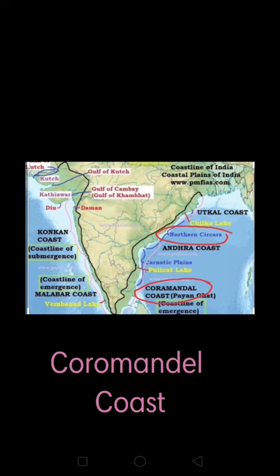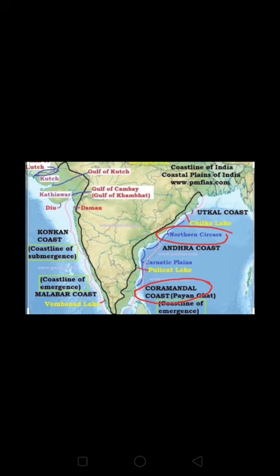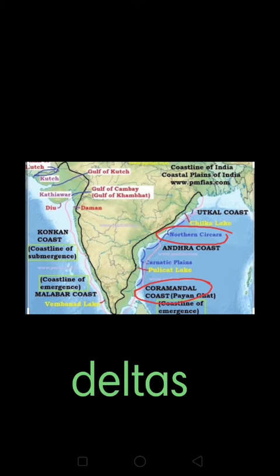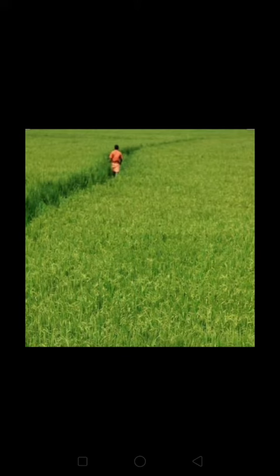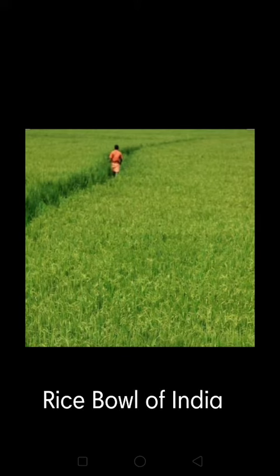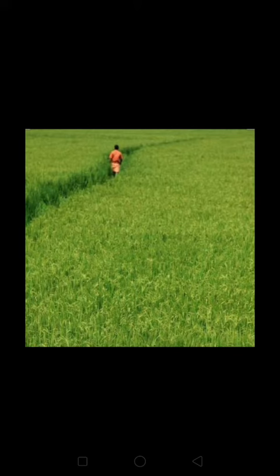At the mouth of the rivers Mahanadi, Godavari, Krishna and Kaveri, deltas have been formed. Hence these Eastern Coastal Plains are very fertile and are known as the rice bowl of India. Rubber, sugarcane, cotton, coconut and jute are also grown here.